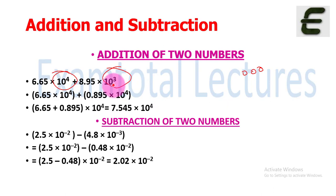First, you move the decimal towards the left, which changes 8.95 times 10 raised to power 3 to 0.895 times 10 raised to power 4. That way you can easily add these two with the same exponent of 10 raised to power 4, giving 7.545 times 10 raised to power 4.